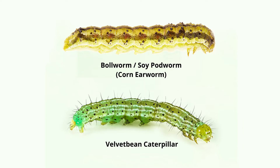Additionally, they will also move very differently and respond to a touch differently than a bollworm does. Velvet bean caterpillars typically become very agitated when they're touched, whereas a bollworm typically will just curl up.